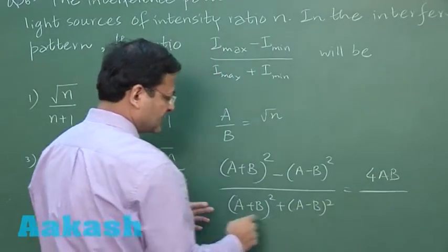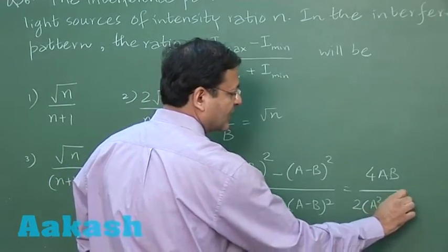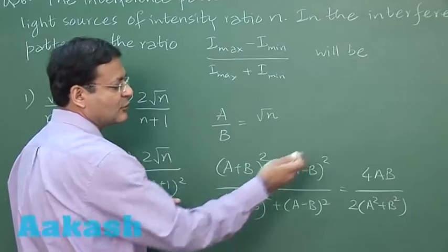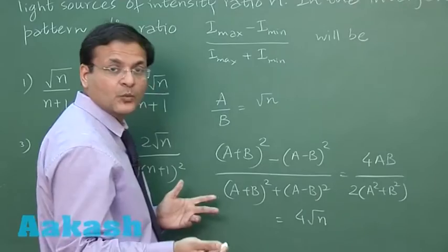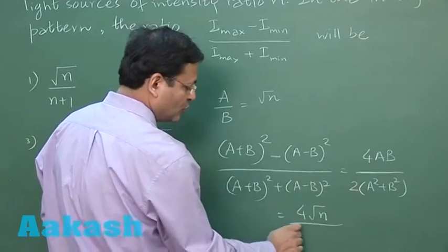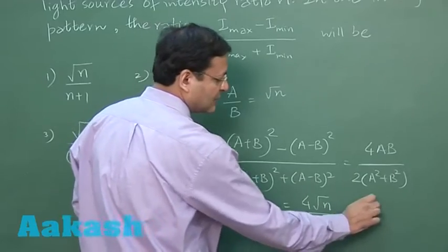If you solve it, you will find this is 4ab, isn't it, and this side it is twice of a²+b². So what I'm doing, since the ratio is like this, for a let us suppose I am substituting √n and for b I am substituting 1, so this is now 2n+1.